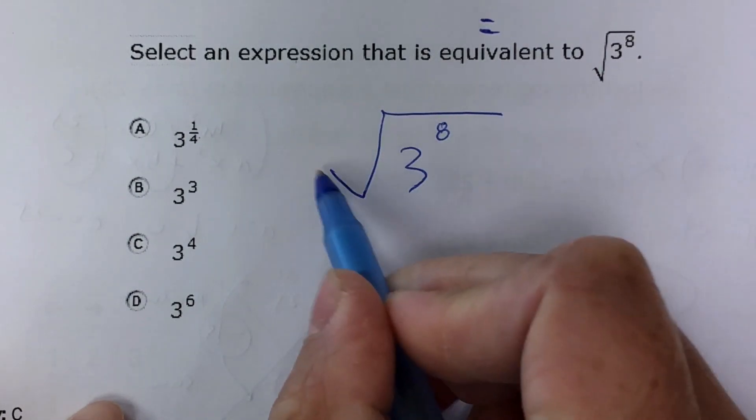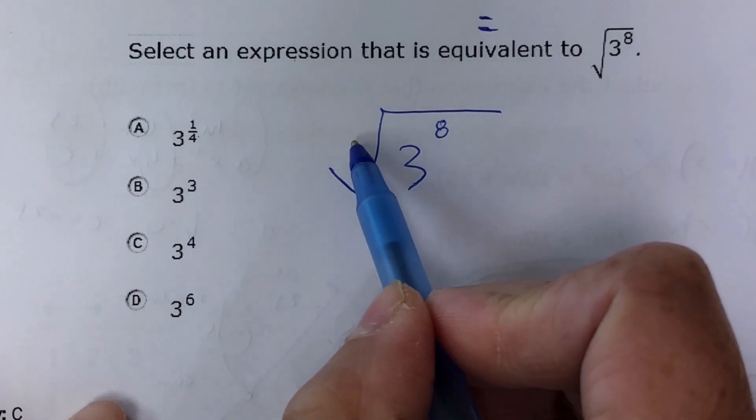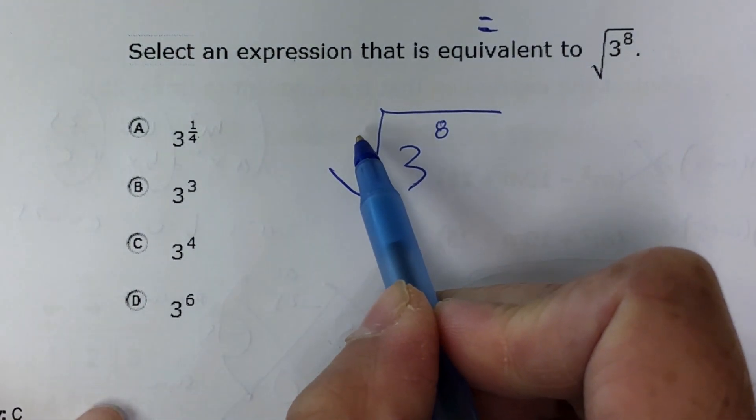Now, square roots or radicals, the default number, meaning the number that's always there, it's not a 0, it's not a 1, it's a 2.